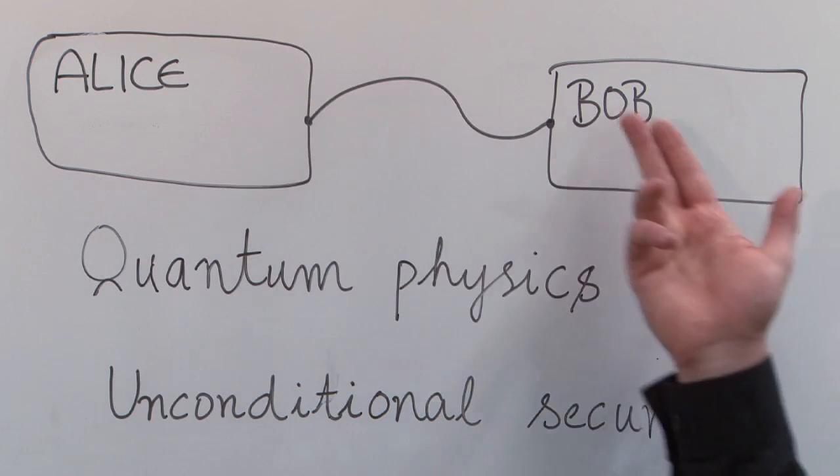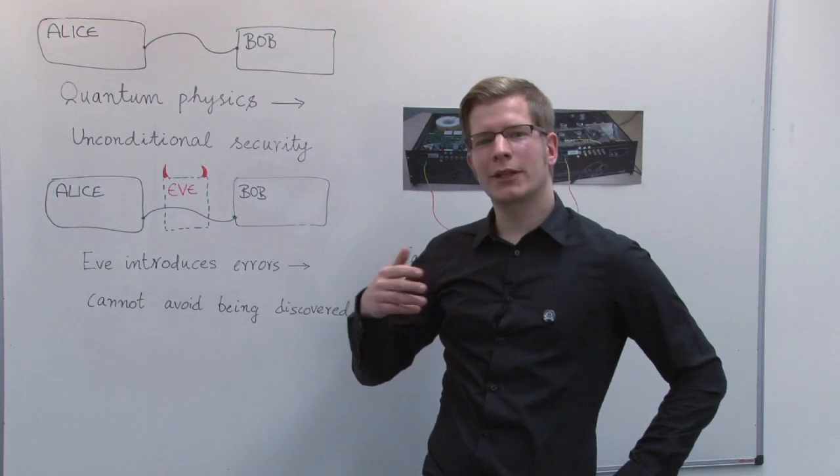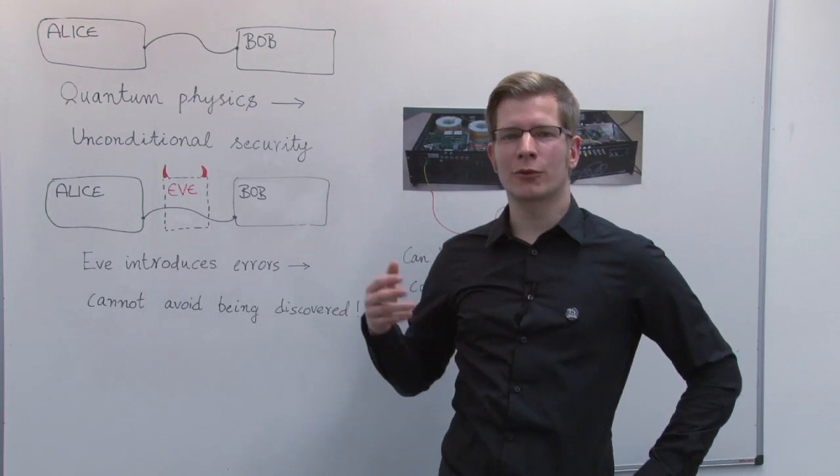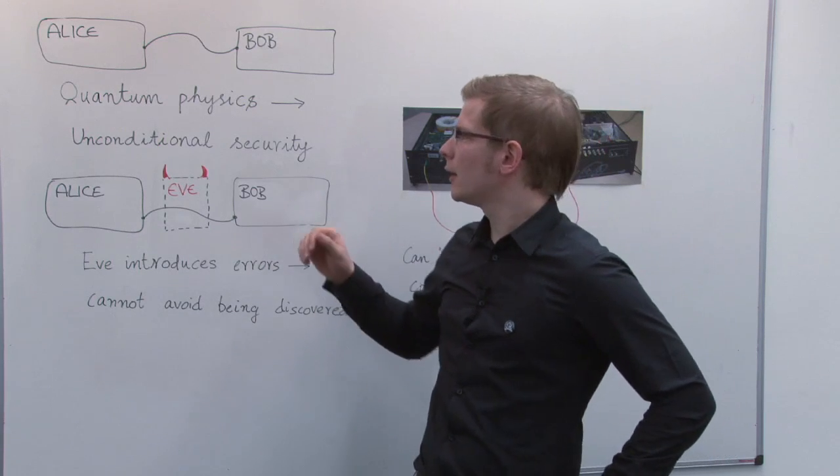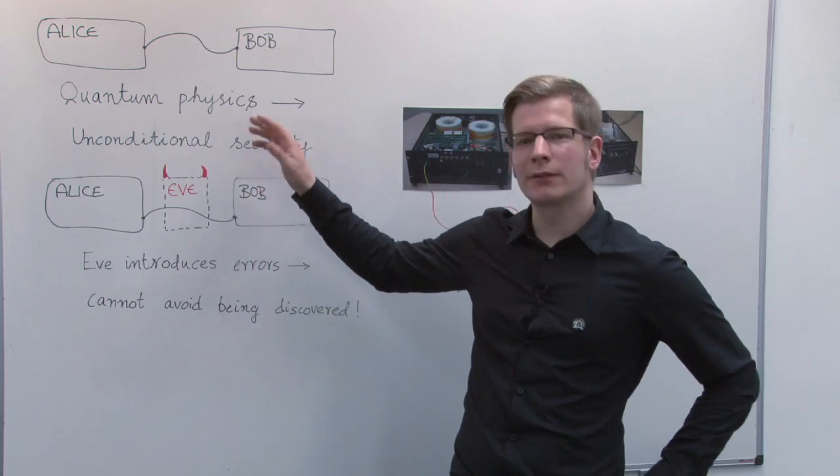Let's say that two parties, Alice and Bob, want to communicate. Then, in contrast to classical cryptography, quantum cryptography offers them a method with unconditional security, in principle.